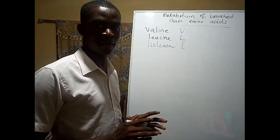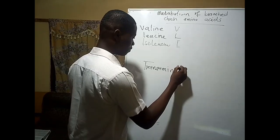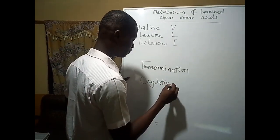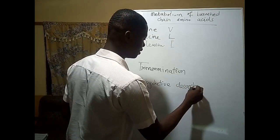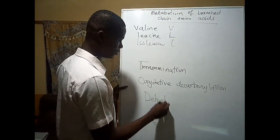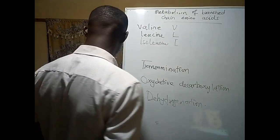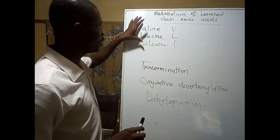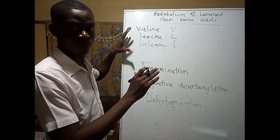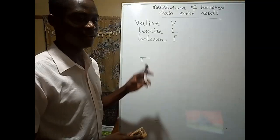In the metabolism of these branching amino acids, we are going to look at three major steps. The first one is transamination, the second is oxidative decarboxylation, and the last is dehydrogenation. There are important enzymes responsible for each of these steps.